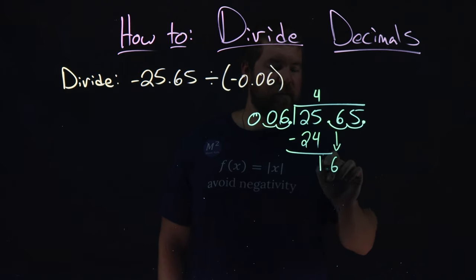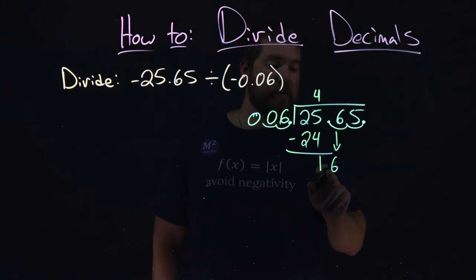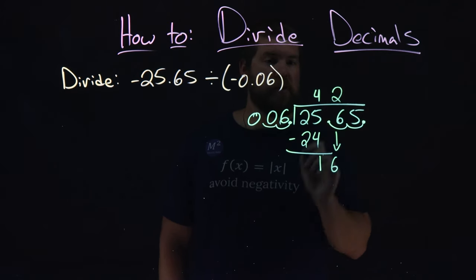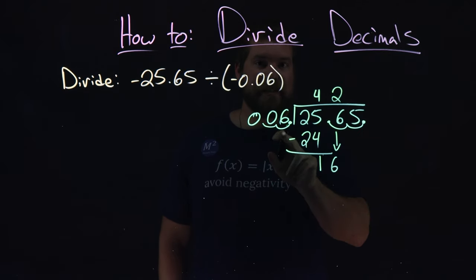Let's bring down this 6. 6 can go into 16 how many times? That's going to be 2. 2 times 6 gives us 12.